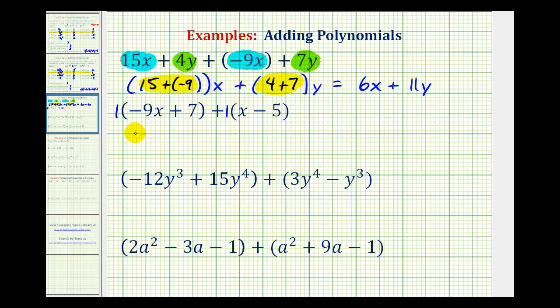So this would just be negative 9x plus 7 plus x. Now we could write this as plus negative 5, but it's more common just to write minus 5. And now we'll identify the like terms. Here's an x term, and here's an x term, and here are two constants.